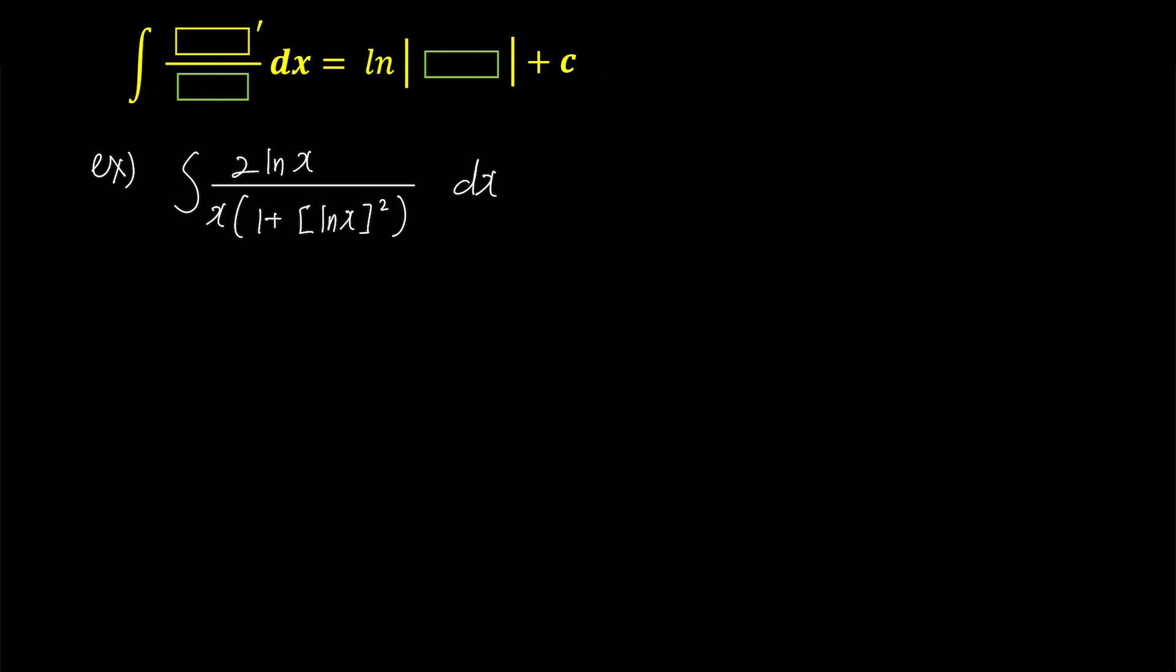Here's the problem we introduced earlier. It looks very complicated, doesn't it? Let's take it apart step by step. First, let's move the x in the denominator to the numerator by multiplying both top and bottom by 1 over x as we did before.